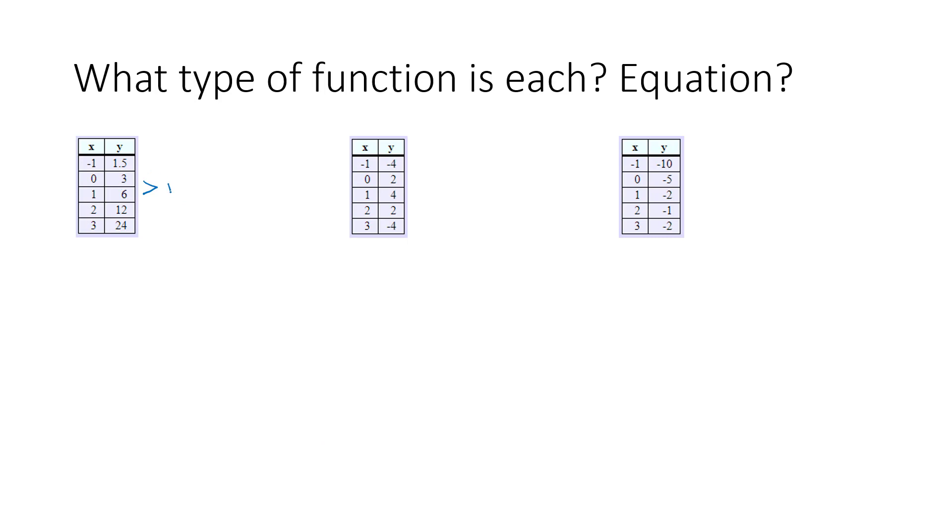To go from three to six, you could add three, or you could multiply by two. Let's see what happens in the next one. From six to twelve, you could add six, or you could multiply by two. You might notice here, we multiplied by two both times. Is that going to work? To go from one point five to three, can we multiply by two? Yes.